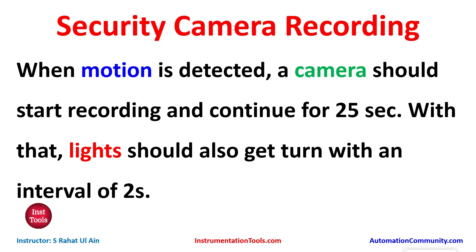When motion is detected, a camera should start recording and continue for 25 seconds. With that, lights should also get turned on within an interval of 2 seconds. The motion will be detected by a sensor. When the sensor detects any motion, the camera will start recording for 25 seconds, and during that time, lights will turn on for 2 seconds, then turn off for 2 seconds, repeating this for 25 seconds.